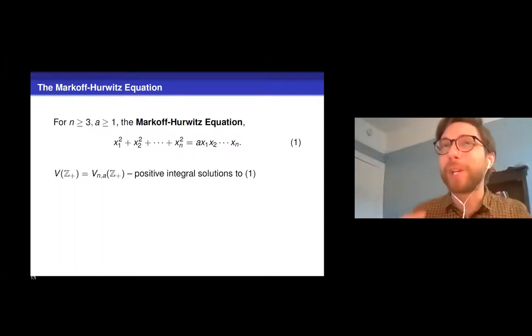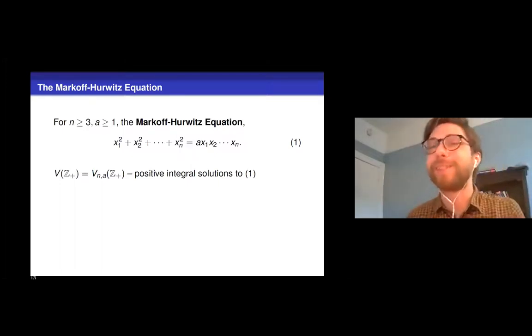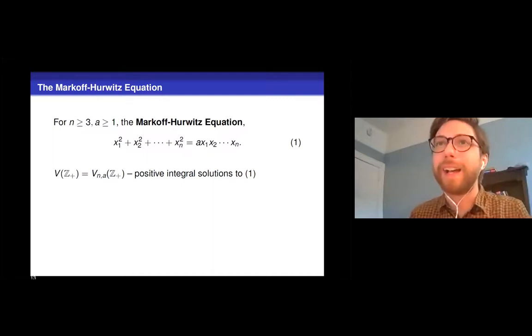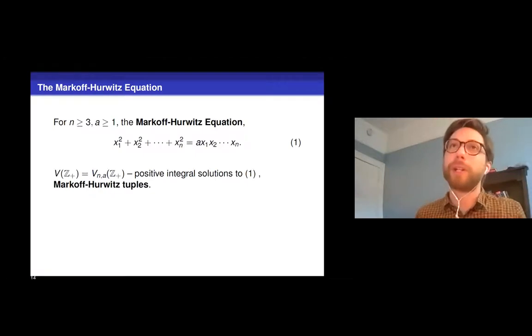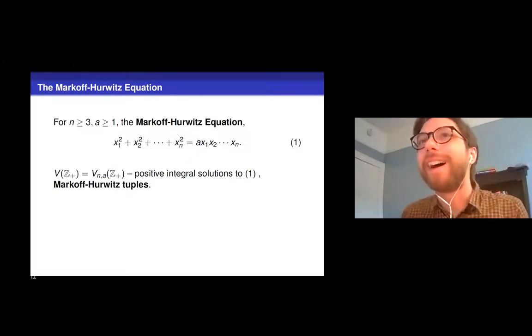So we're going to be interested in counting solutions to this equation today. Let's see, to be a bit more formal here, let's say V(Z₊) is going to denote the set of solutions to this equation with positive integral coordinates. We're going to call these the Markoff-Hurwitz tuples now, rather than triples. I should also say here the Hurwitz here is referring to the mathematician Hurwitz who studied this in 1907, roughly.